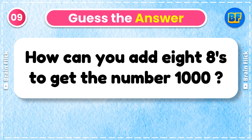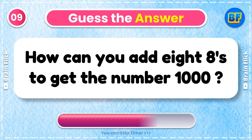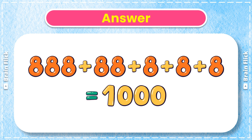Riddle 9. How can you add 8 8's to get the number 1000? Answer: 888 + 88 + 8 + 8 + 8 + 8 = 1000.